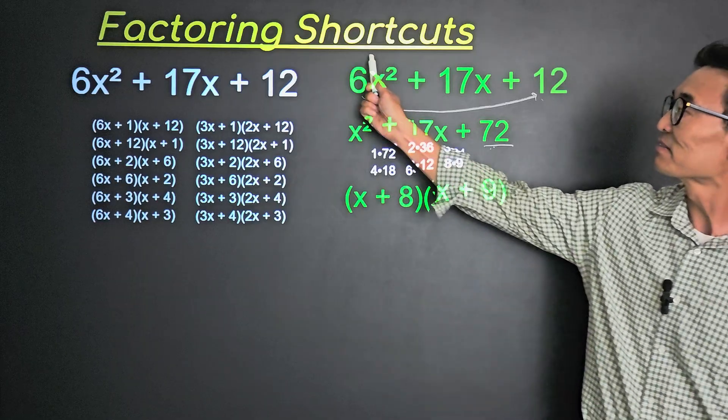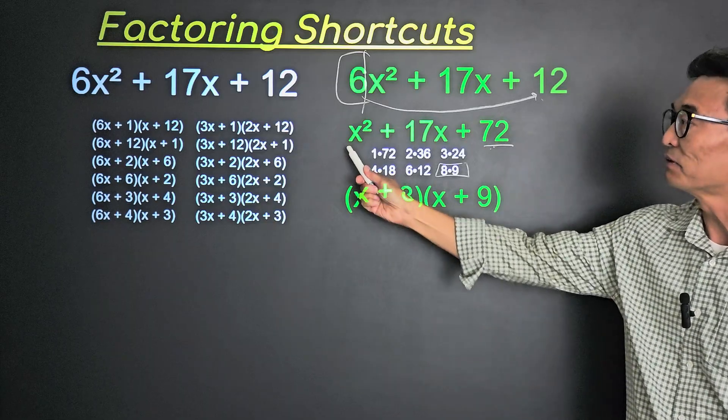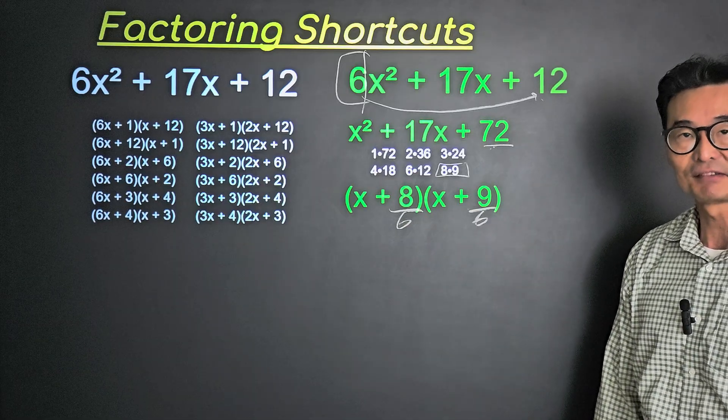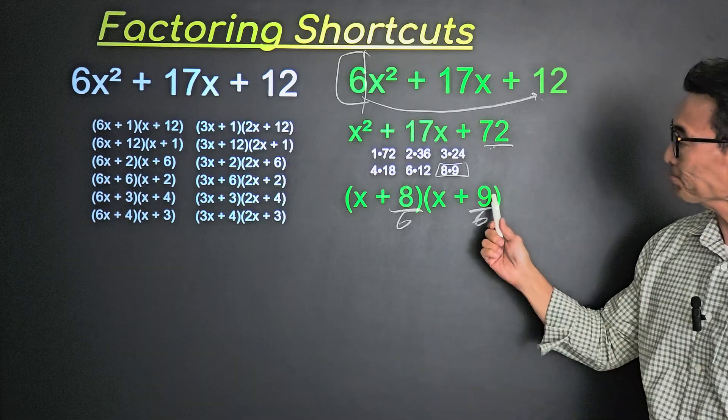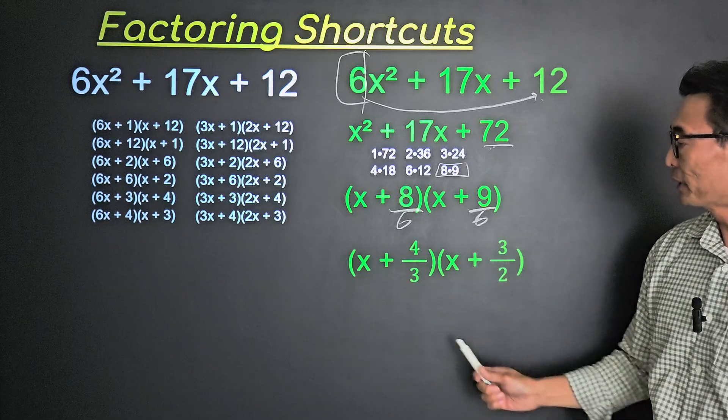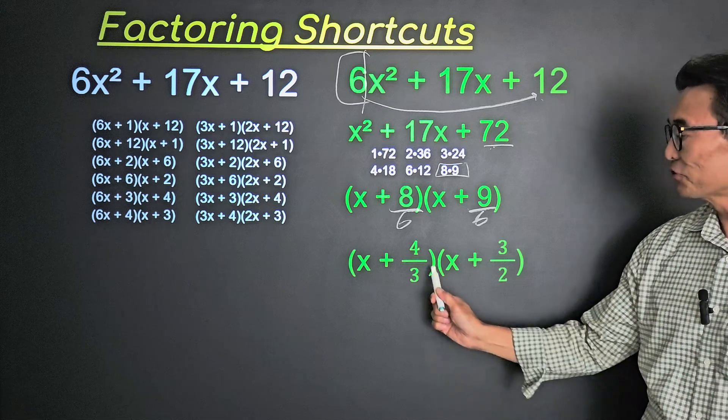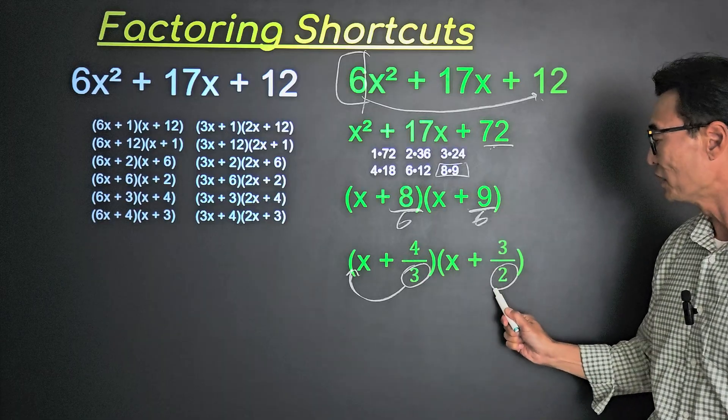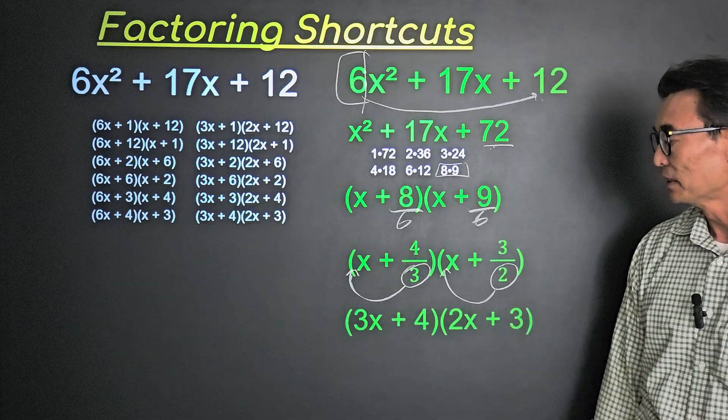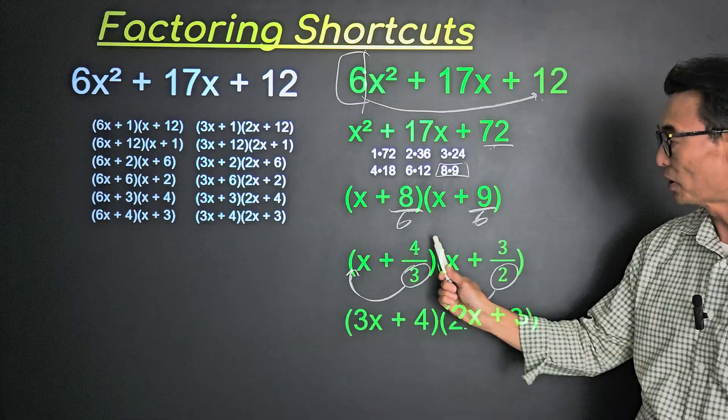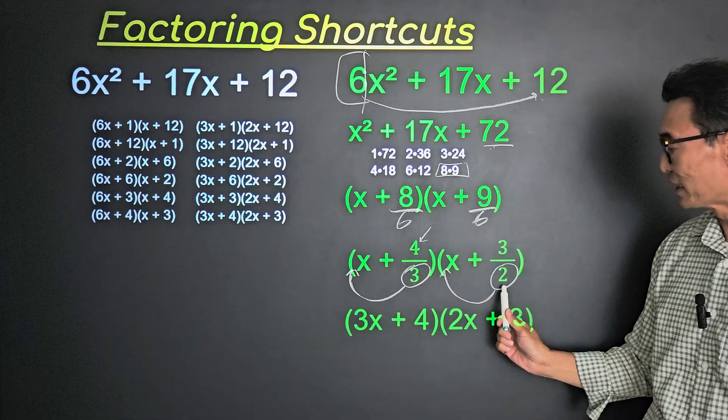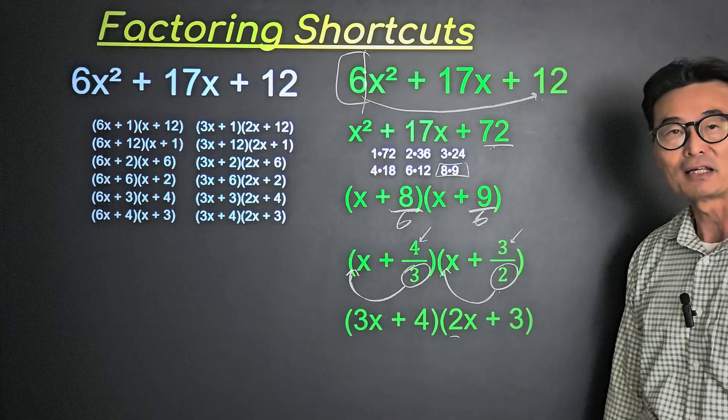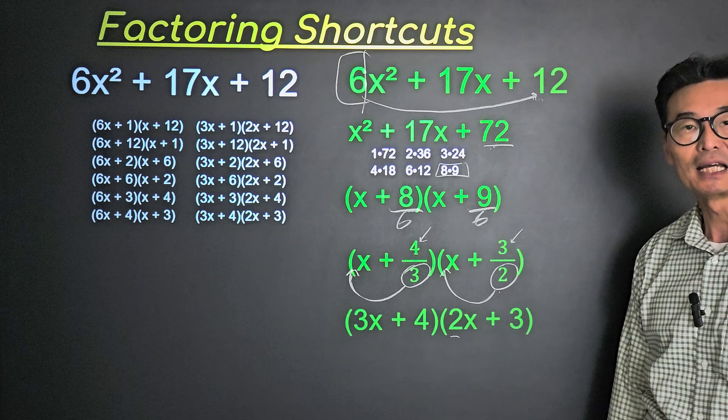We're not done, of course. Remember that 6 that we multiplied to the 12 and got rid of from the front of x squared? It's now time to divide the 8 and the 9 that we have by that same 6. And if you reduce 8 over 6 and 9 over 6, we end up with 4 over 3 and 3 over 2. And our final step is to take that denominator, put it in front of the x, and also that 2 in front of the x, where we end up getting 3x + 4 times 2x + 3 as the final answer or factored form of this complicated looking trinomial.